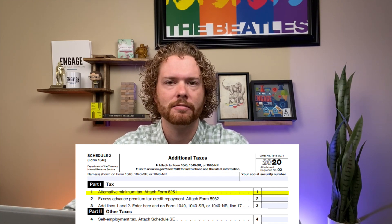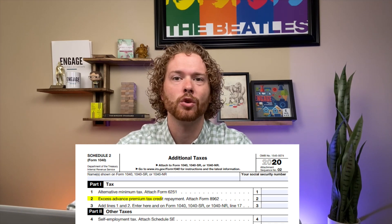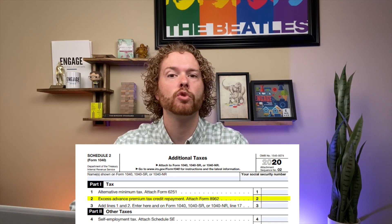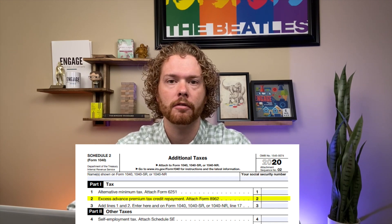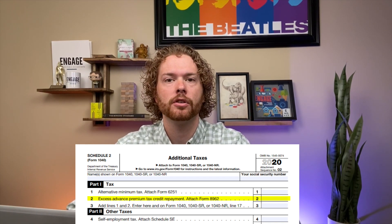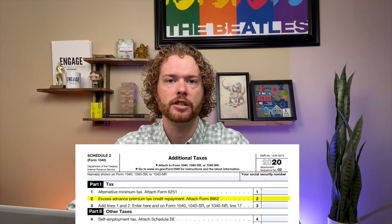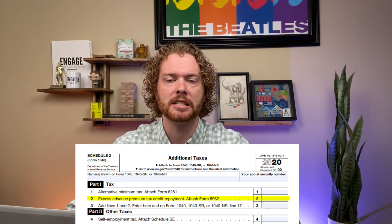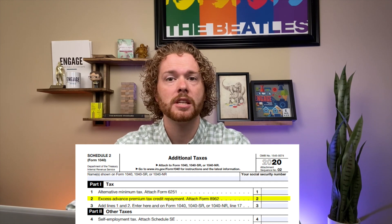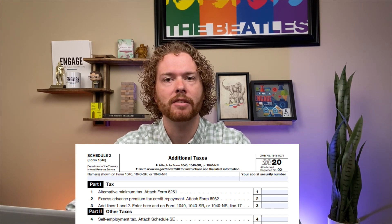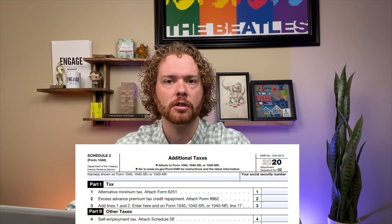The next line is only used if you have to repay some of the subsidies you received from your health insurance through healthcare.gov. If you paid too little in health insurance premiums based on your AGI, you might have to pay some of those subsidies back to the government. The sum of those lines goes on line 17 of Form 1040.